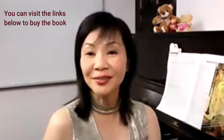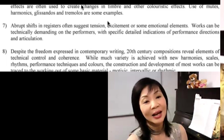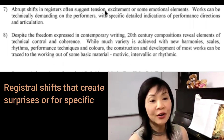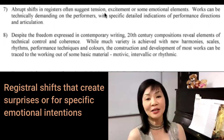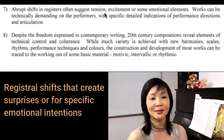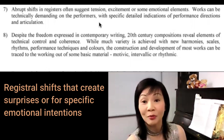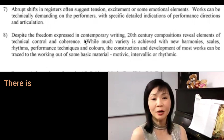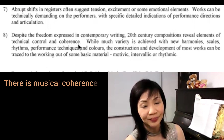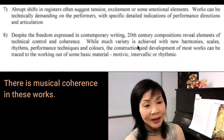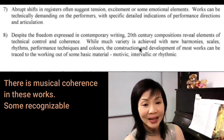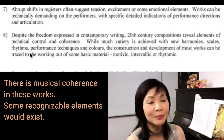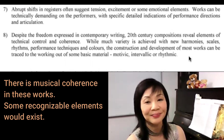Modern composers also shift registers very often to create tension, excitement in the music, and also some new emotional elements. These works can be technically difficult for some performers. Last of all, despite the freedom used in contemporary writing, most of these 20th century compositions still contain elements of control. Coherence is established, particularly in the shape, form, and sometimes the intervals used. There's much variety in terms of new harmonies, scales, rhythms, performance techniques, and colors.